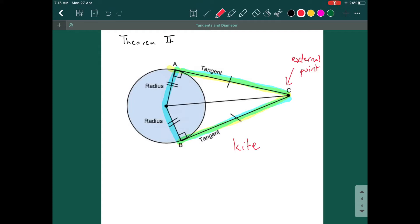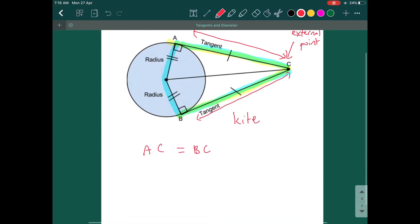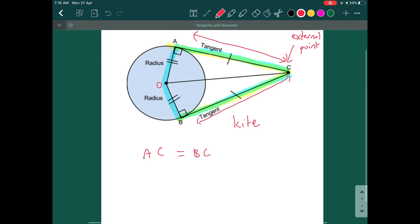What's property of a kite? AC, this one AC, would be equal length to BC. And let's say I put the O as center of circle. AO, that's number one, is also equals to OB, this one equals to this one.